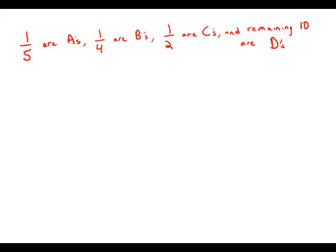Of the final grades received by the students in a certain math course, one-fifth are A's, one-fourth are B's, one-half are C's, and the remaining ten grades are D's. What is the number of students in this course?